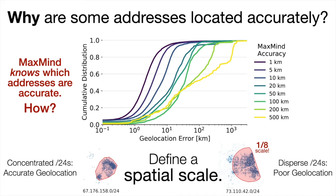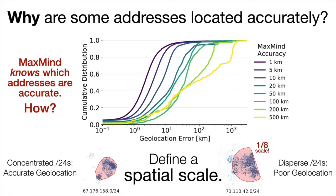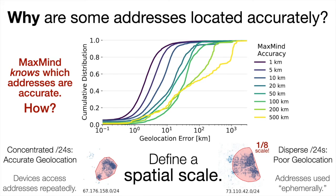Incidentally, if we were to do this for the mobile ISPs, we saw that each slash-24 was used over basically the entire urban area. But still, we haven't really answered the question — we've just postponed it. Why do certain groups of addresses on fixed-line networks have large spatial scales? In the paper, we show that users return repeatedly to addresses on spatially concentrated slash-24s, whereas they tend to hit addresses from spatially dispersed ones just once. Those addresses appear to be used ephemerally, and this behavior shows up on several, although not all, ISPs.